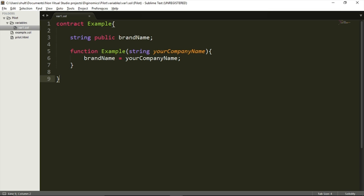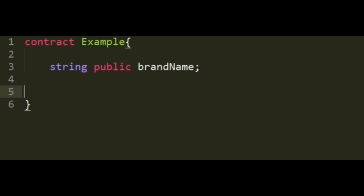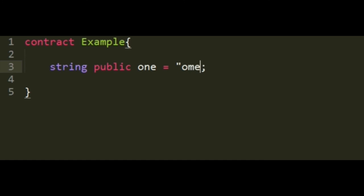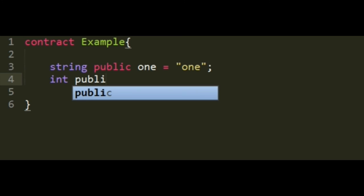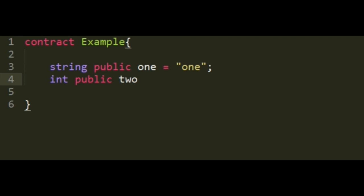Let's start with a very basic example. Let's clean our smart contract. We're going to leave this public string, and I'm just going to change the name of the variable so it will be easier to follow. Let's call this one 1, and we're going to assign it the string '1'. The next type of variable that can be used in Solidity is integer. We're going to make this one public as well, call this one 2, and the value is going to be 2. An integer can only contain an integer, and a string can only contain a string.